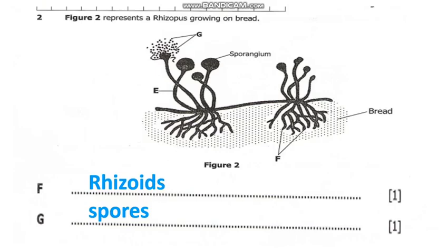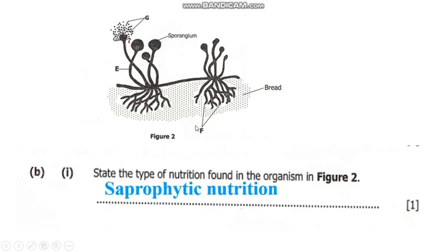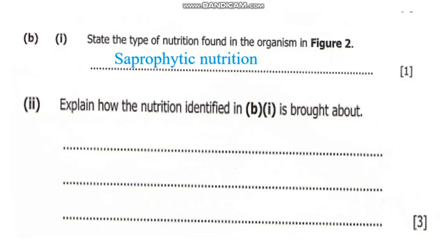We now move on to question 2B: state the type of nutrition found in figure 2. The type of nutrition found in this figure is called saprophytic nutrition. That is the type of nutrition that Rhizopus undergoes.